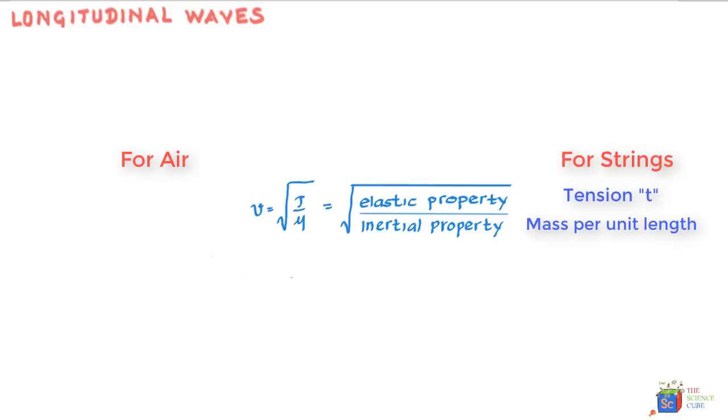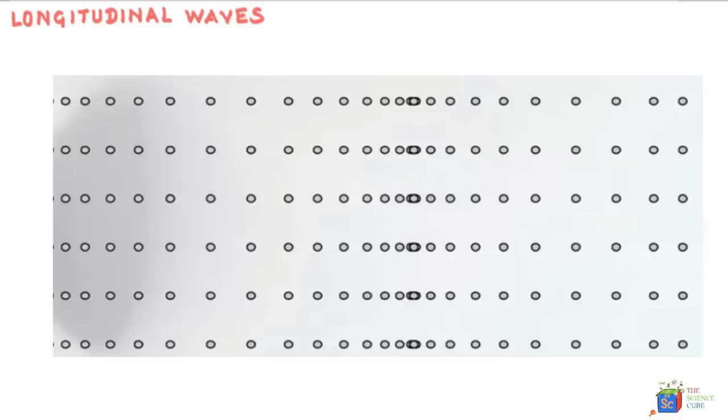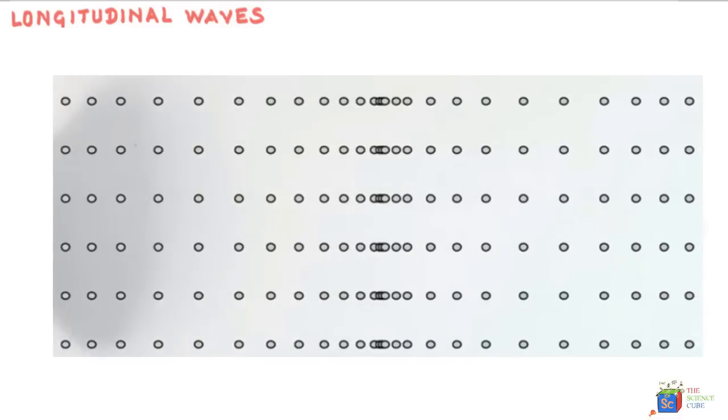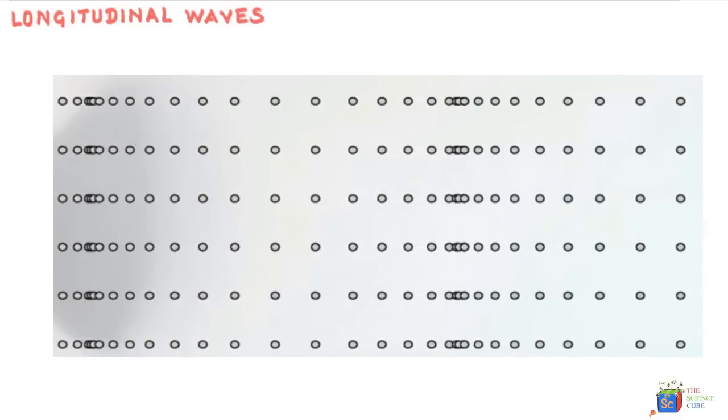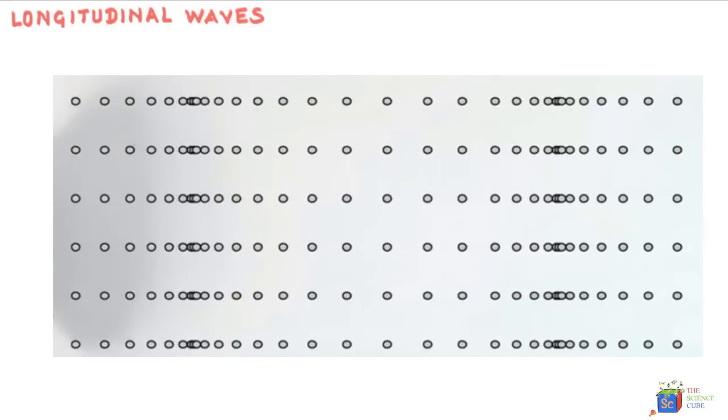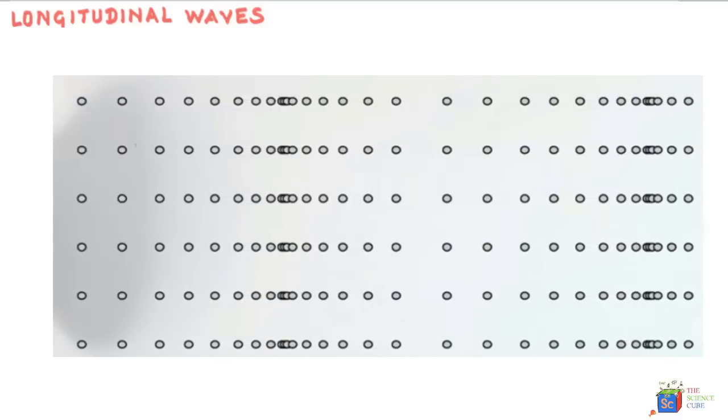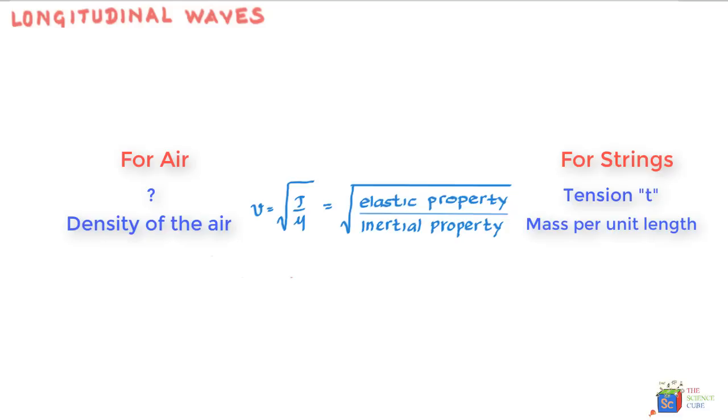Well, if the medium is air and the wave is longitudinal, we can guess that the inertial property of mu is the density of the air. But what would be the elastic property that substitutes tension T in a string? Well, as a sound wave passes through air, potential energy shows up in the periodic compression and expansion of air. And the property that determines the limits to which the element of a medium changes in volume when pressure is changed is called the bulk modulus B.